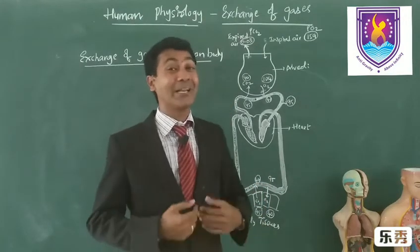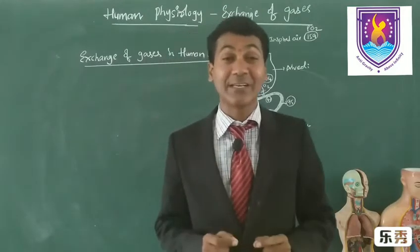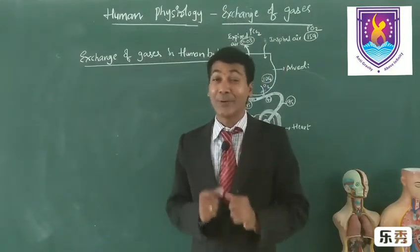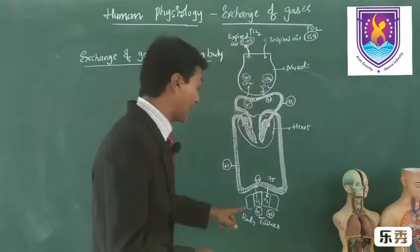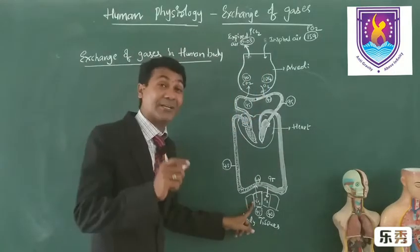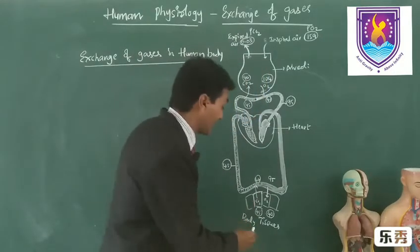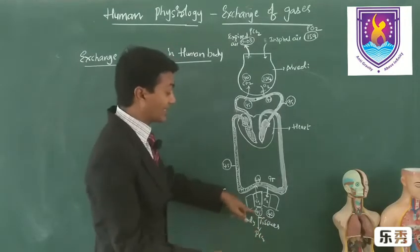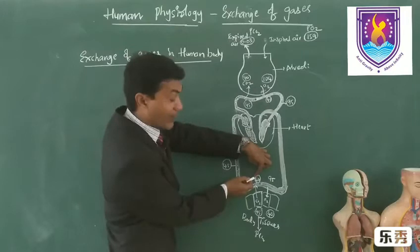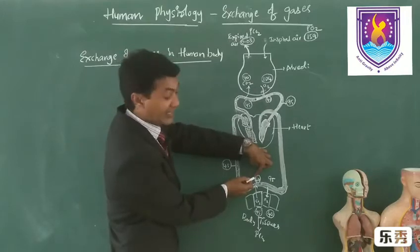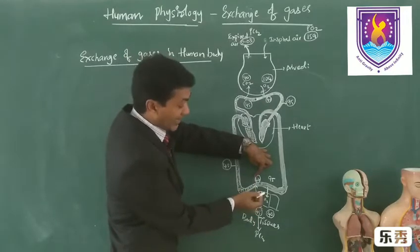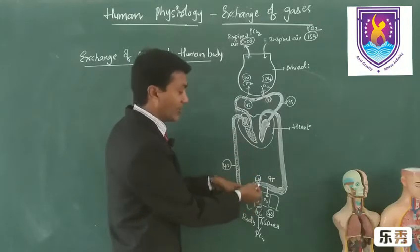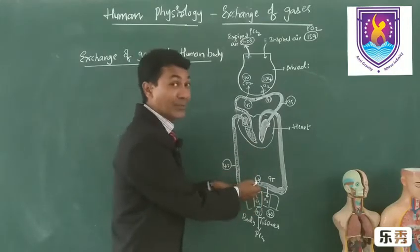Once oxygen is utilized in the process of respiration, carbon dioxide is released as an end product. The tissues possess 45 mmHg of partial pressure of carbon dioxide, whereas the capillaries possess only 40 mmHg. So carbon dioxide moves from tissues to capillaries — higher to lower — by simple diffusion.